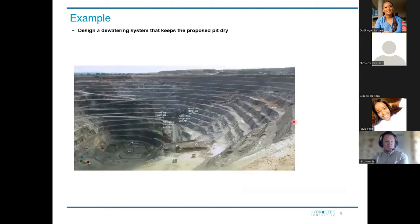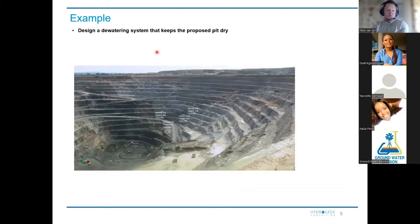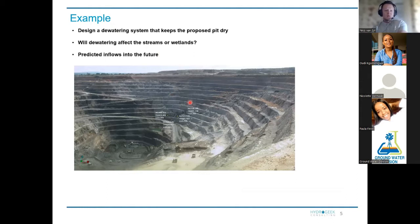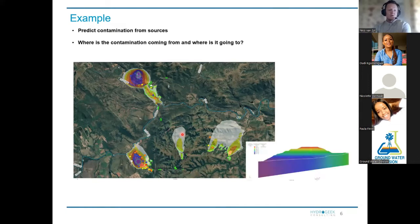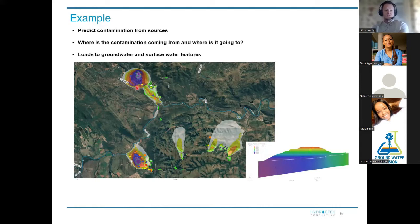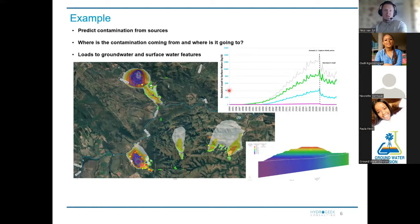An example I've been using is: design a dewatering system that keeps the pit dry. We get asked to dewater a pit — tell us the inflows and how we can design a dewatering system with boreholes, horizontal drain wells, and inflows into the future. We also get asked to trace contamination from sources, go back into history, see what the large contribution is, how we can manage the system, and how we can use scavenger wells.